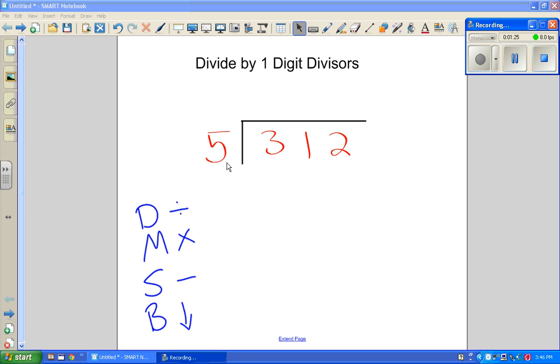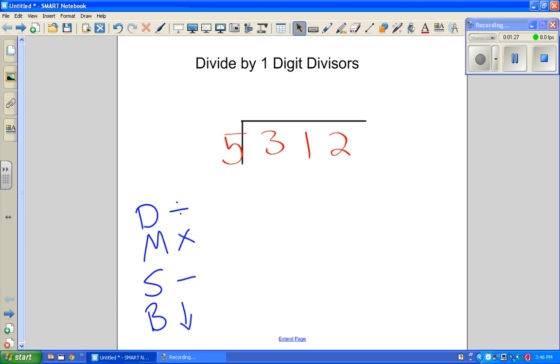The first thing you need to do is divide. So this 5, does it go into 3? Well, obviously, 5 is bigger than 3. You can't fit 5 into 3. So instead, we look to the next number. We're only going to look 5 into 31. Can 5 fit into 31? The answer is yes.